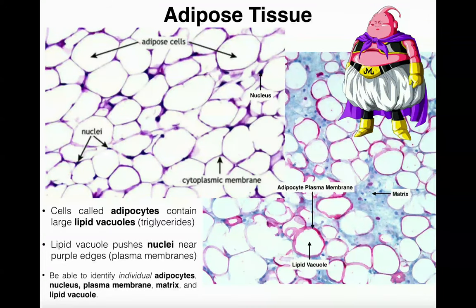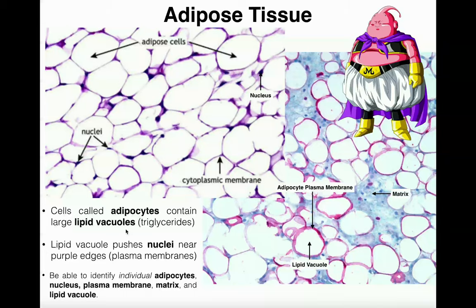The second tissue we're going to cover is adipose tissue, or fat tissue — not technically a part of connective tissue proper. On an exam, you must write the full scientific name: adipose tissue. In simplest terms, adipose tissue comprises body fat. The individual cells are called adipocytes, and each one contains large lipid vacuoles. These vacuoles occupy the vast majority of the cell's volume and contain triglycerides — that's how the body stores fat.